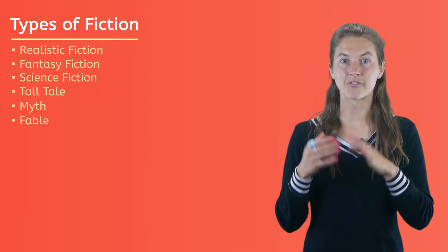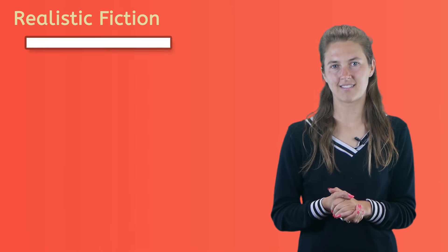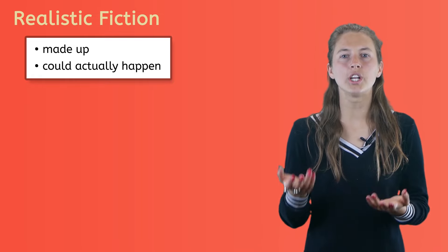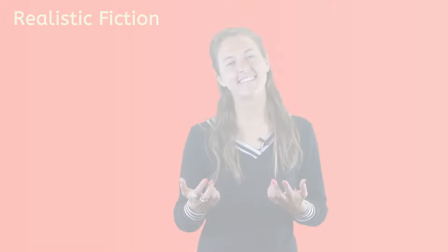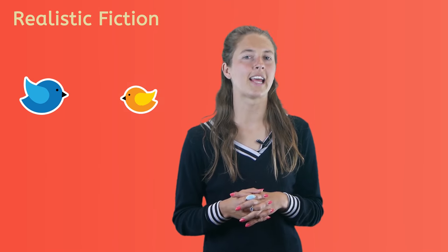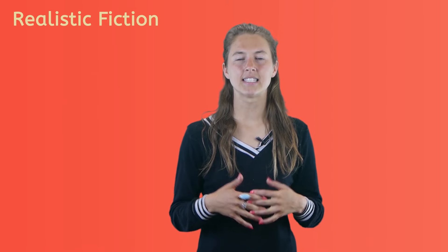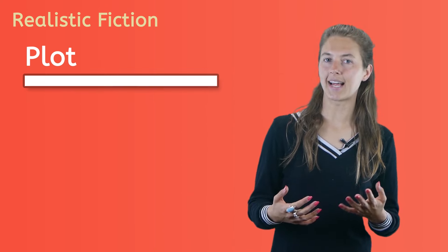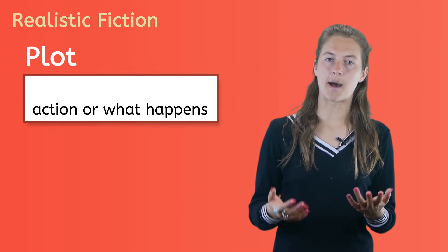Okay, so, realistic fiction is one of the most common types of fiction written. The story is made up, but everything in the story could actually happen. So in realistic fiction, there are no flying lizard monkeys or talking animals. What makes this type of fiction so popular is that it is easier for us, the readers, to imagine the story by putting ourselves into the plot. The plot is the action, or what happens in the story.